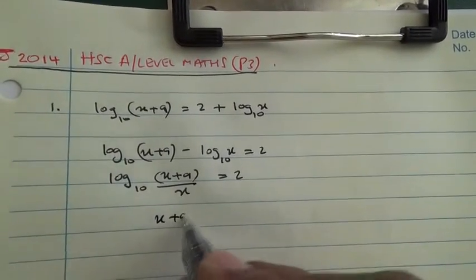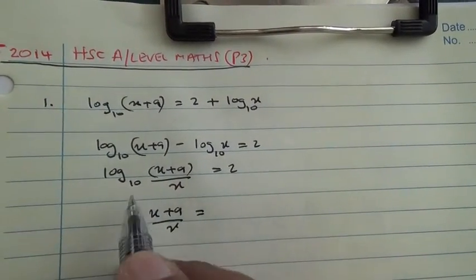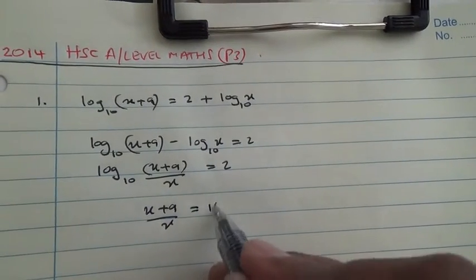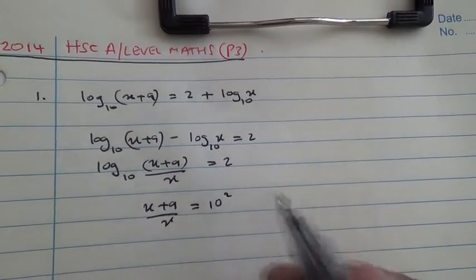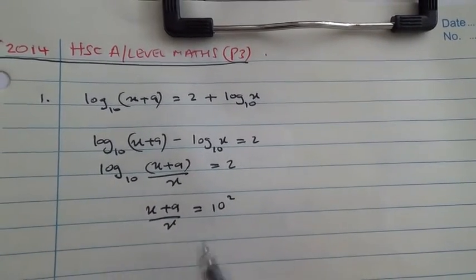Hence, (x+9)/x is equal to the base - the base goes there and the answer becomes the power - so 10 to the power of 2.